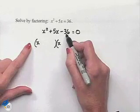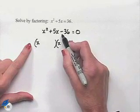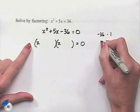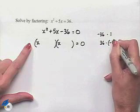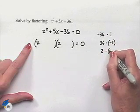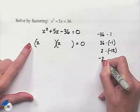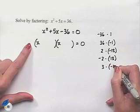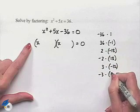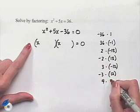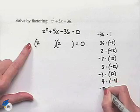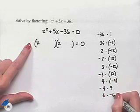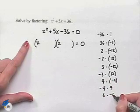Next, we're going to be looking at the factors that would multiply together to give us negative 36. We could have negative 36 times positive 1, positive 36 times negative 1, 2 times negative 18, negative 2 times positive 18, 3 times negative 12, negative 3 times positive 12, 4 times negative 9, negative 4 times positive 9, and 6 times negative 6.